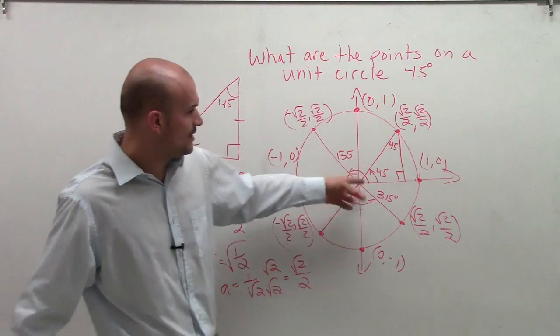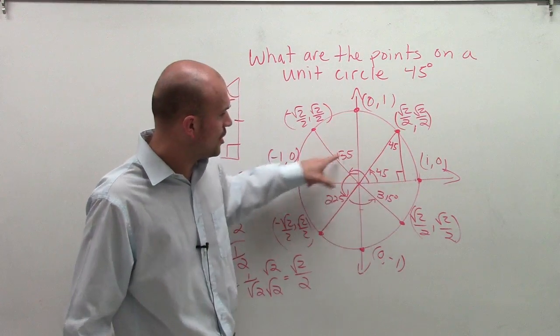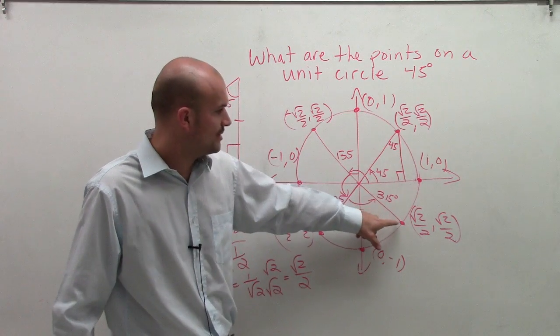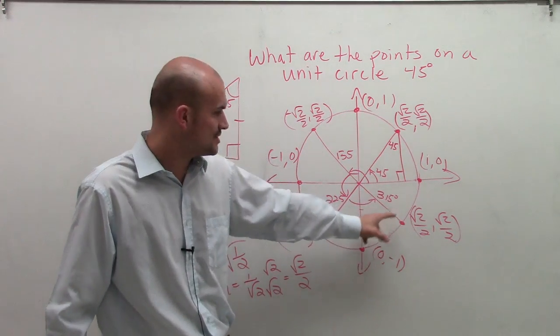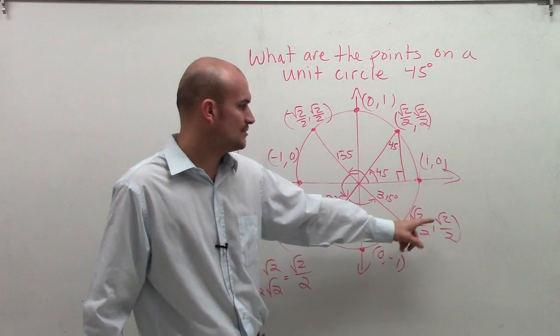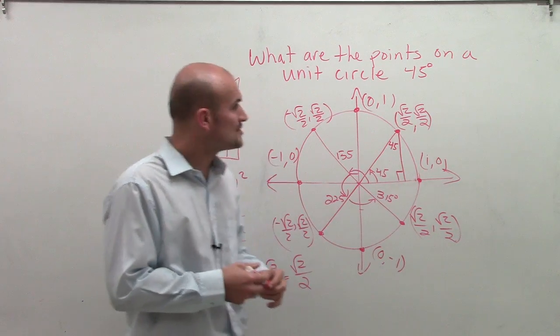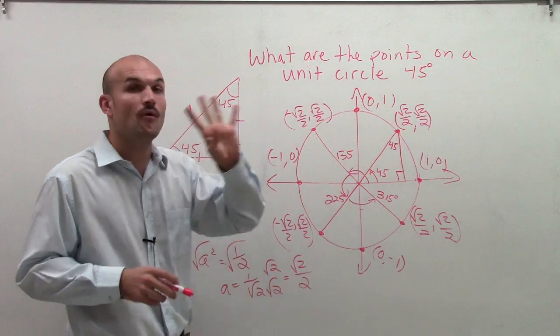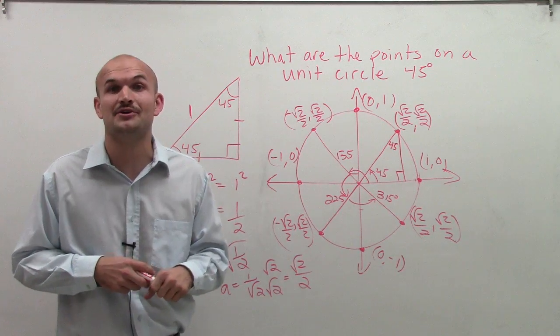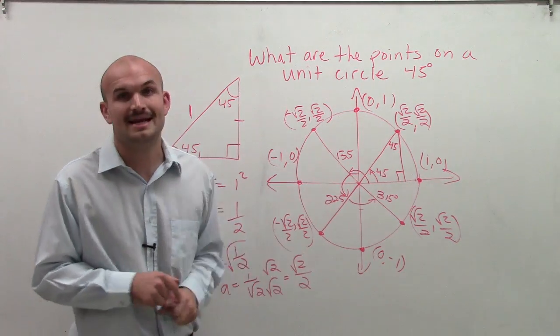So if I wanted to find these coordinate points, the angle to this point is 315 degrees, and the point on the unit circle is square root of 2 over 2, square root of 2 over 2. So there you go—four new points we can now find on our unit circle with their corresponding angles. Thanks.